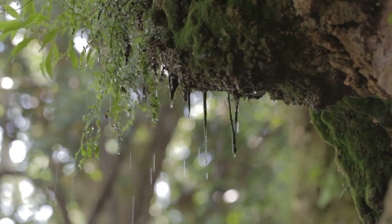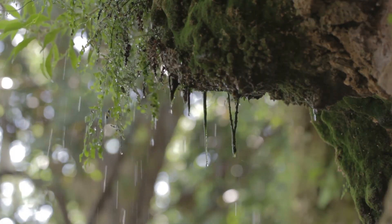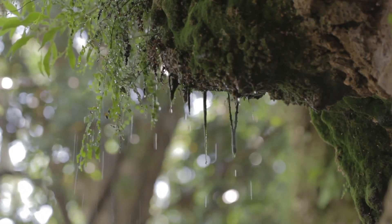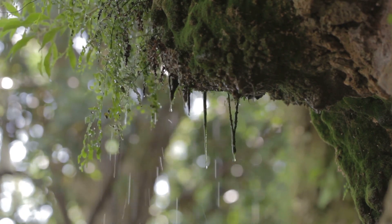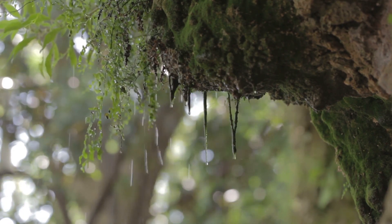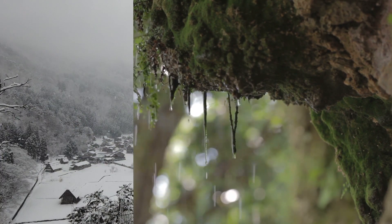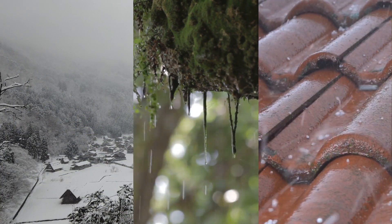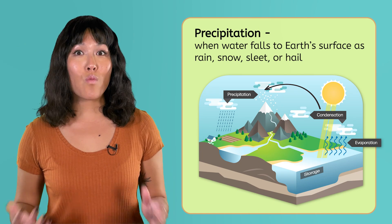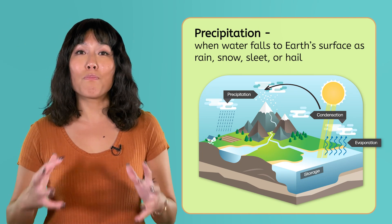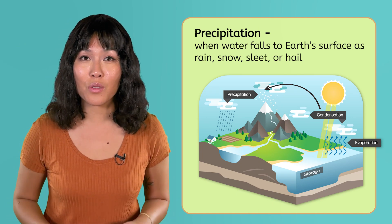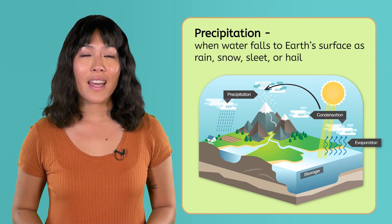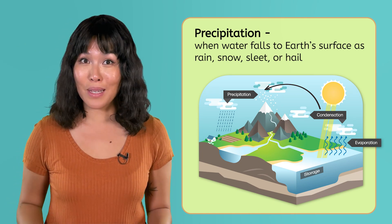The next step for most water droplets is falling as rain. But some might also fall as snow, sleet, or even hail. When water falls back to the Earth's surface in one of these forms, it's called precipitation.